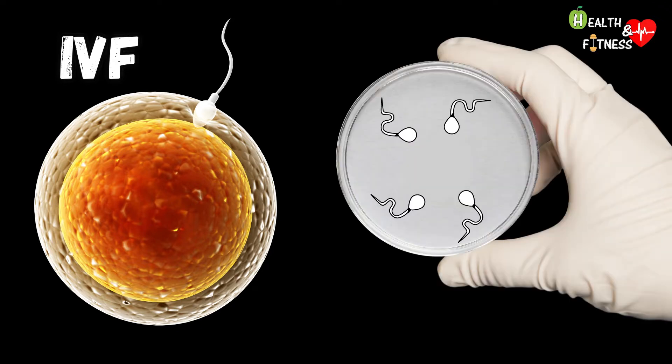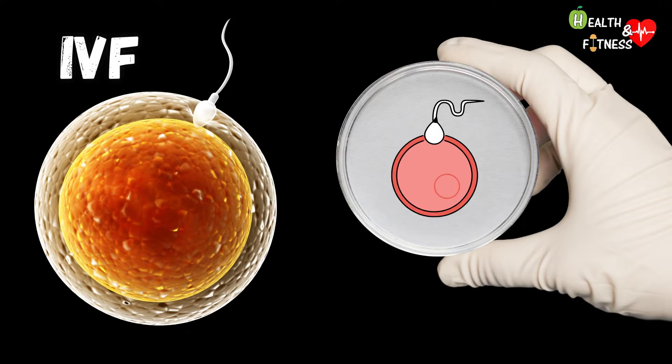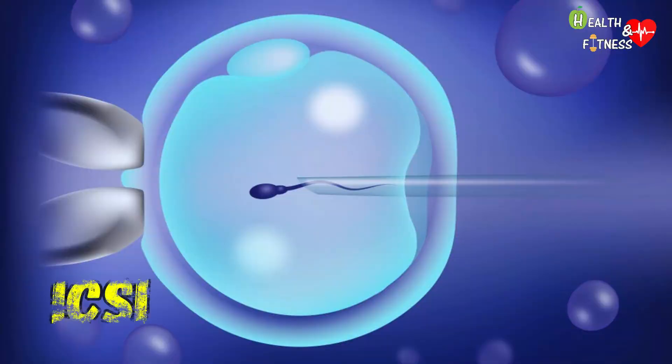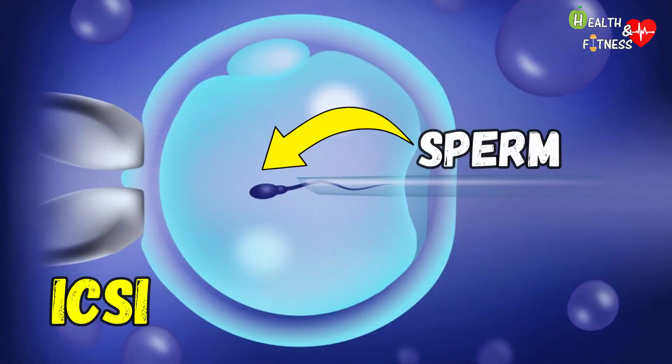At this point, insemination can take place in two ways. In the case of in vitro fertilization, the spermatozoa, previously treated in the laboratory, and the oocyte are placed on the same culture plate, and the sperm is expected to naturally penetrate the membrane surrounding the egg. In the case of intracytoplasmic sperm injection (ICSI), a single sperm is injected directly into the cytoplasm of the oocyte.